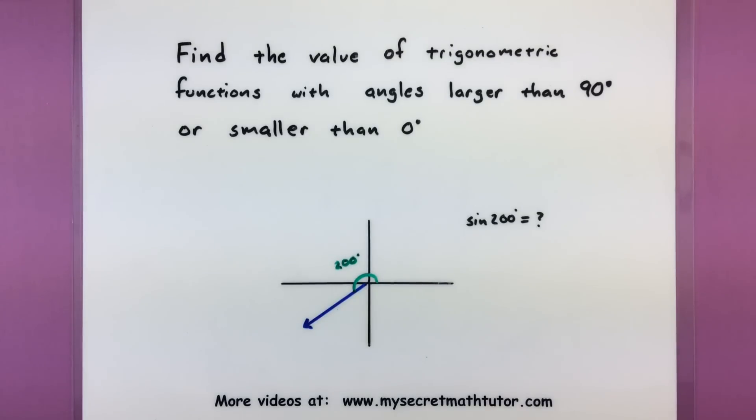Hello and welcome to Mike C from Math Tutor. In this video we want to find the value of different trigonometric functions when our angle is either larger than 90 or smaller than zero.